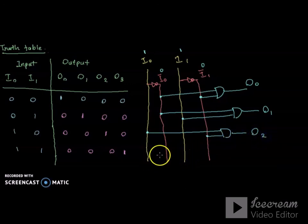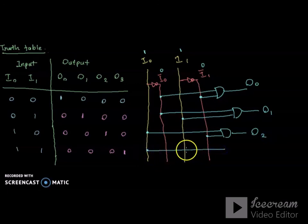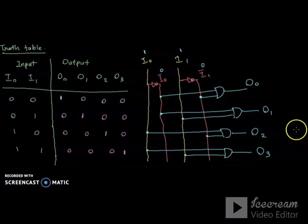Next: when both I0 and I1 are 1, the output corresponds to o3. This is the circuit implementation of the 2x4 decoder.